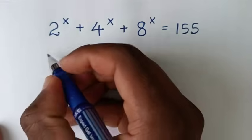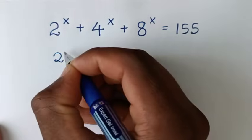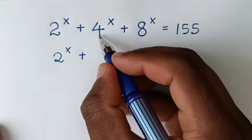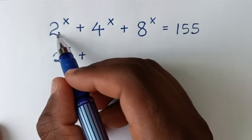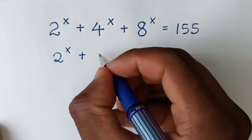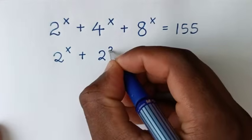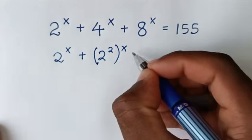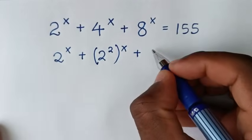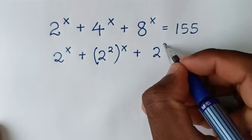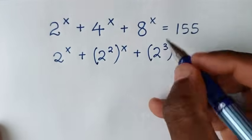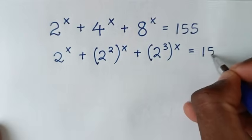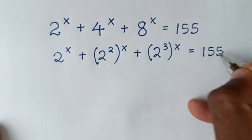From our problem, which is 2 power of x plus 4 power of x, we want to make them the same base, like the base of 2. So 4 is the same as 2 power of 2, then bracket this power of x, plus 8, and 8 is the same as 2 power of 3, then bracket this power of x, is equal to 155.